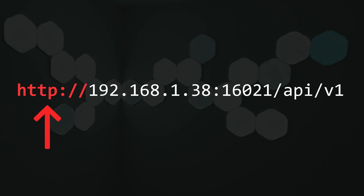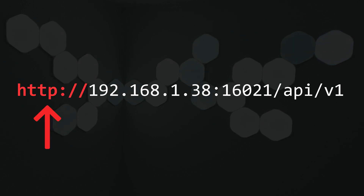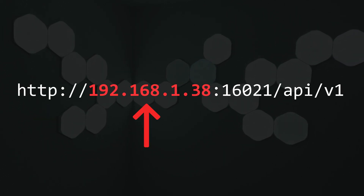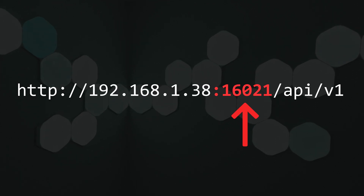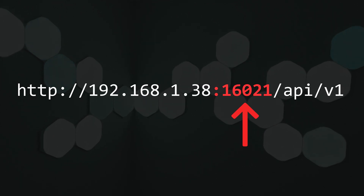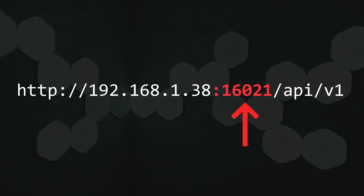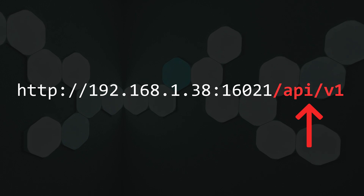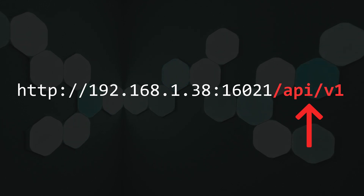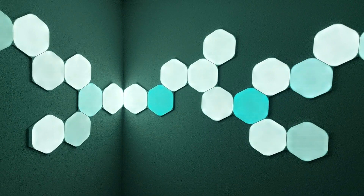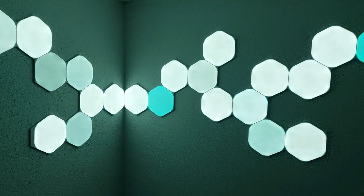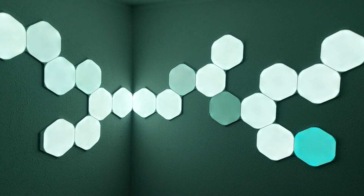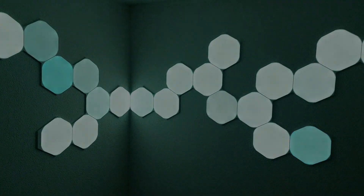The base URL of the endpoint is typically set up as follows: HTTP as the protocol, followed by the IP address of the device, the port — which is 16021 — and the base path, which is api/v1. The exact URL may vary from device to device, so it's advisable to check the official documentation.